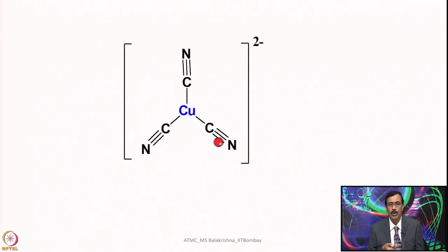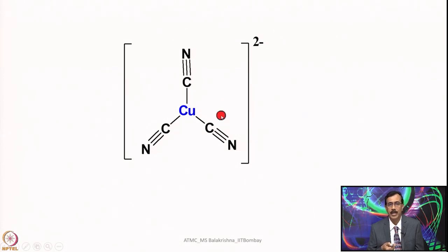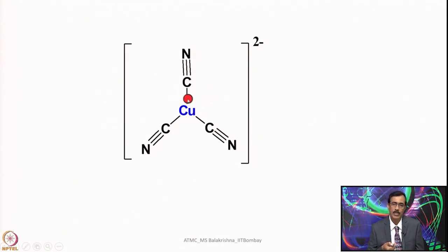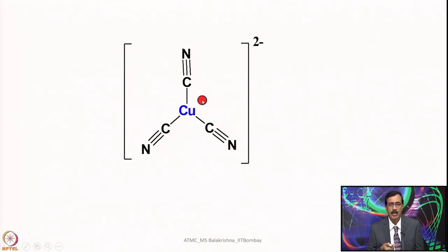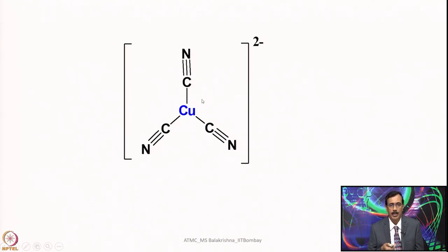For example, tris(cyano)cuprate was shown using VSEPR theory — ignoring d electrons — to arrive at the geometry. Trigonal planar geometry is correct in this case, but citing one or two examples is not an ideal way to accept the model.